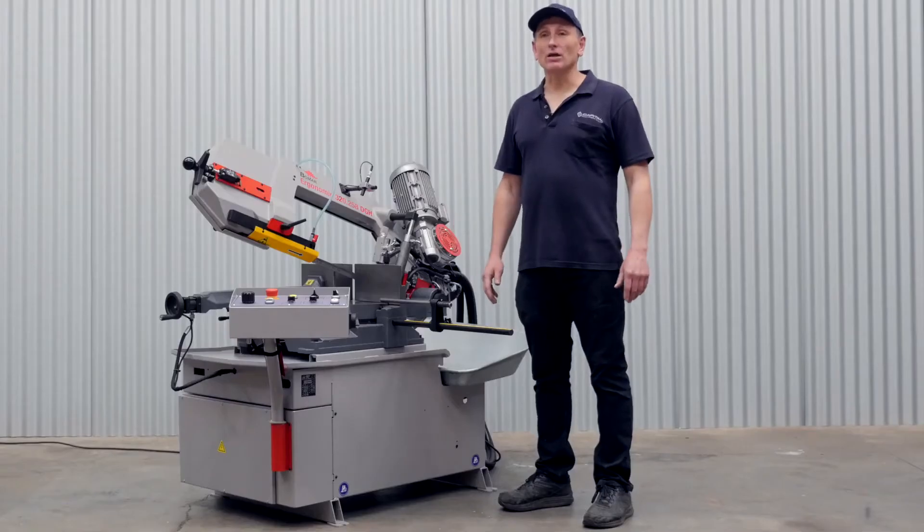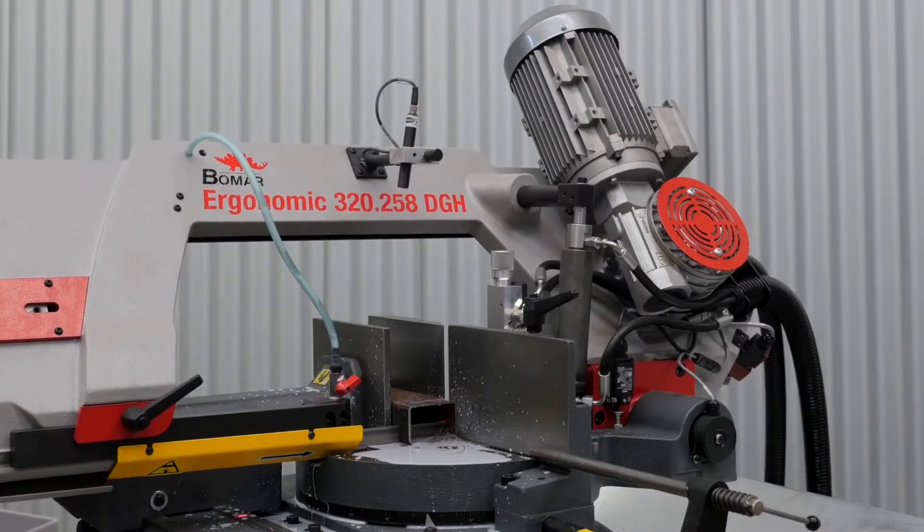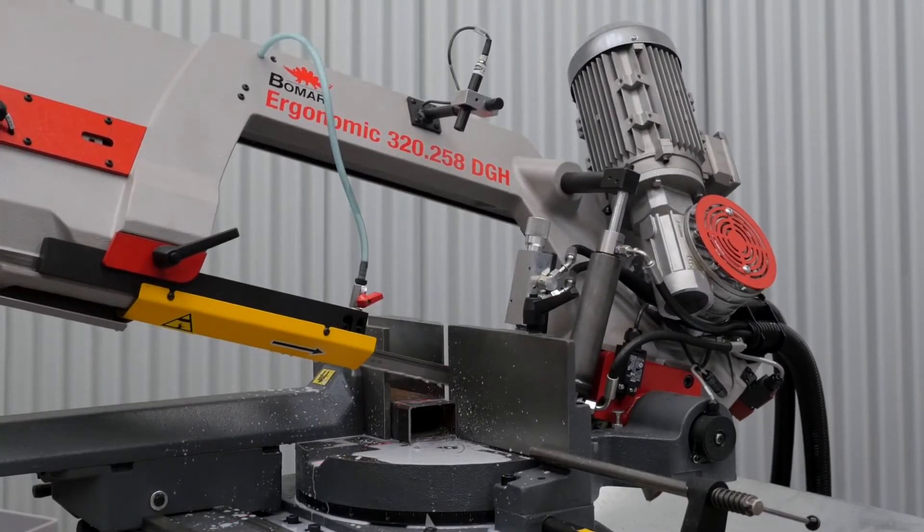Let's go through some of the features. This semi-automatic bandsaw has hydraulic bias clamping and the bow returns to the top of the workpiece after the cut is completed.